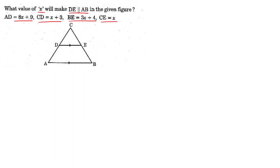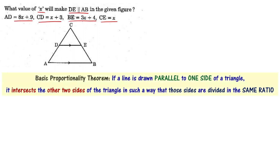In this situation we use the Basic Proportionality Theorem. The Basic Proportionality Theorem states: if a line is drawn parallel to one side of a triangle, then it intersects the other two sides of the triangle in such a way that those sides are divided in the same ratio.